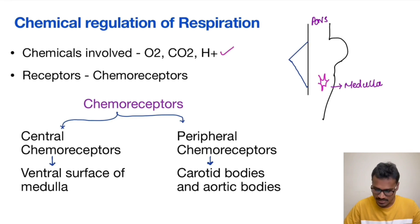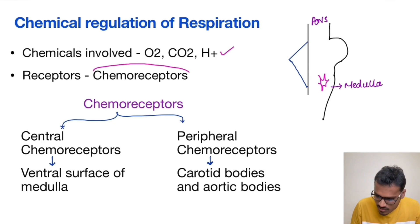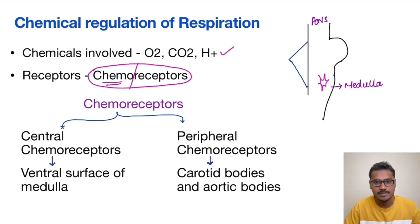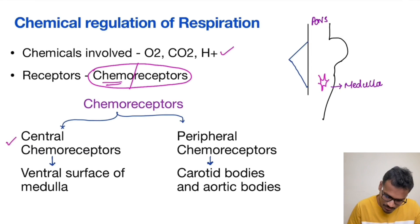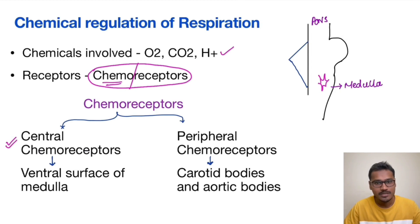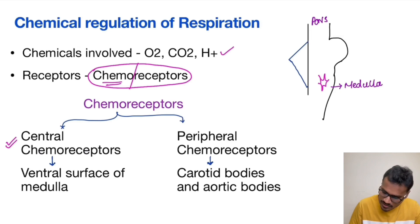These receptors are called chemoreceptors because they are sensing the chemicals — that's why they are named chemoreceptors. The chemoreceptors are generally divided into central chemoreceptors and peripheral chemoreceptors. The central chemoreceptors are located in the medulla, which is an exclusive region for respiration, specifically on the ventral surface of the medulla.